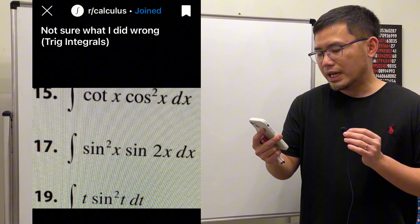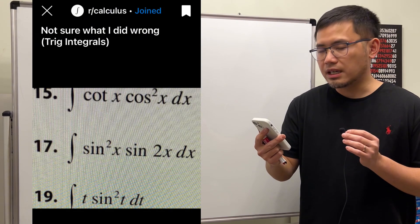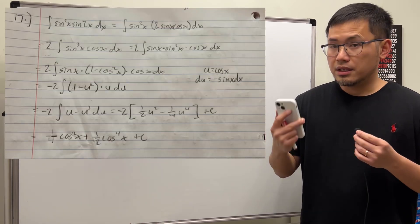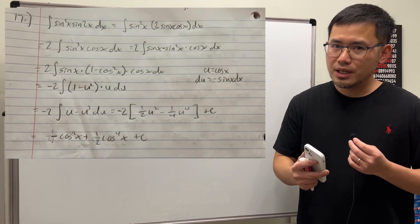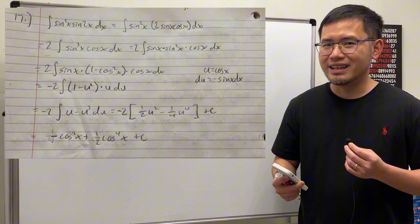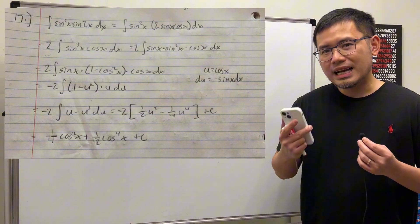Not sure why I did wrong? Here we have the integral of sine squared times sine of 2x. Here is your work. Let me tell you, your answer is totally okay, nothing wrong. The reason that your answer looks different than the answer in the back of the book is just that your answer is off by